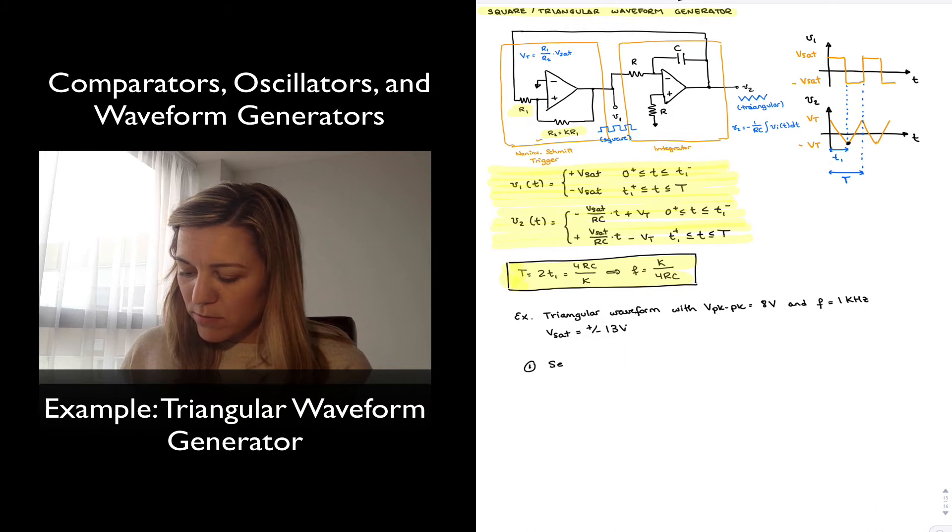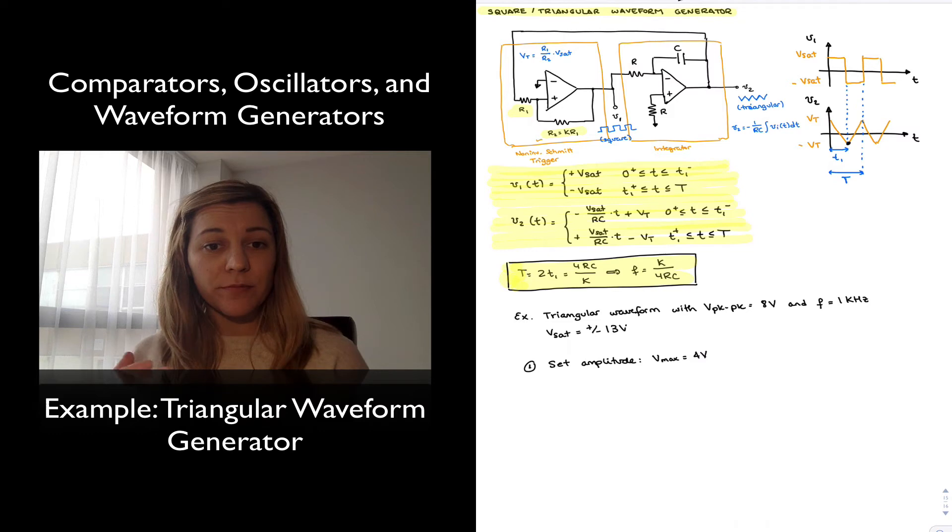So 1, set amplitude V max, let's say, is equal to 4 volts. And it's understood that this is going to be plus minus 4 volts for our triangular waveform.